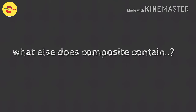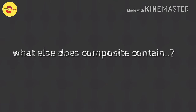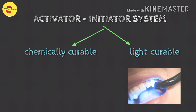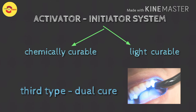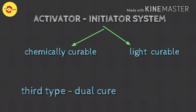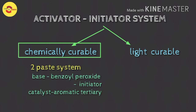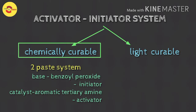Apart from these three main components, dental composites have three minor components: the activation/initiation system, inhibitor, and optical modifiers. The activator/initiation system depends on whether it is a chemically curable (self-cure) resin or a light-cure resin; it can also be dual-cure. The chemically activated resin is usually supplied as a two-paste system — one containing benzoyl peroxide initiator and the other an aromatic tertiary amine activator. When both are mixed, addition polymerization sets in.